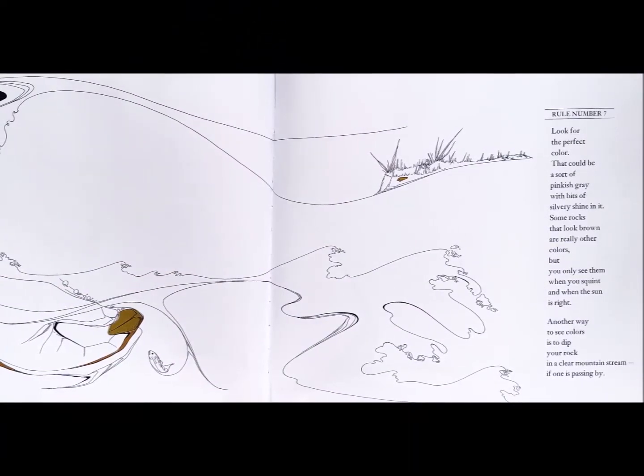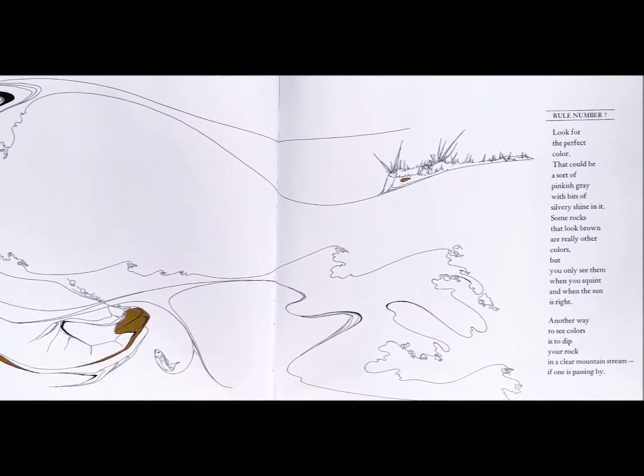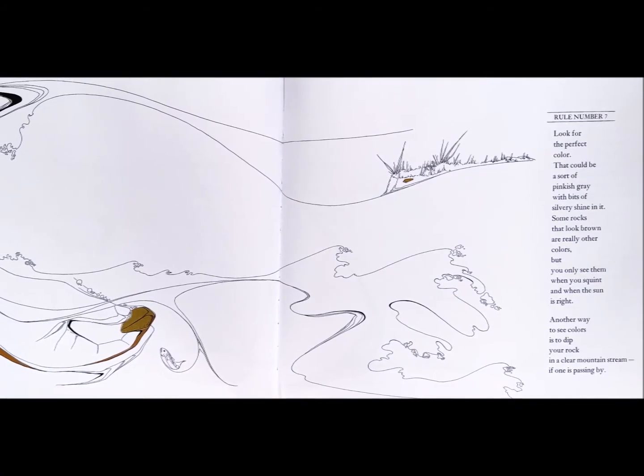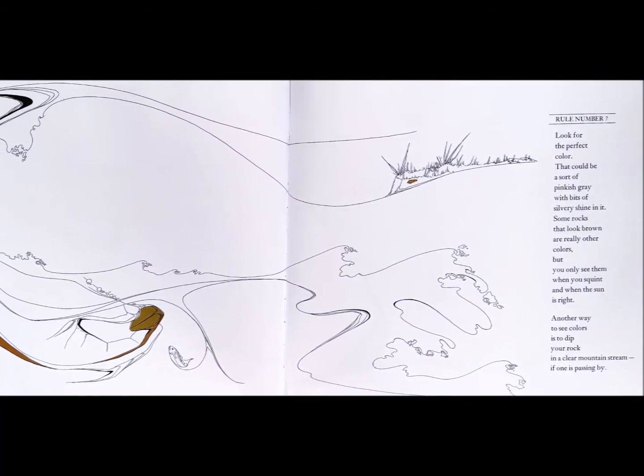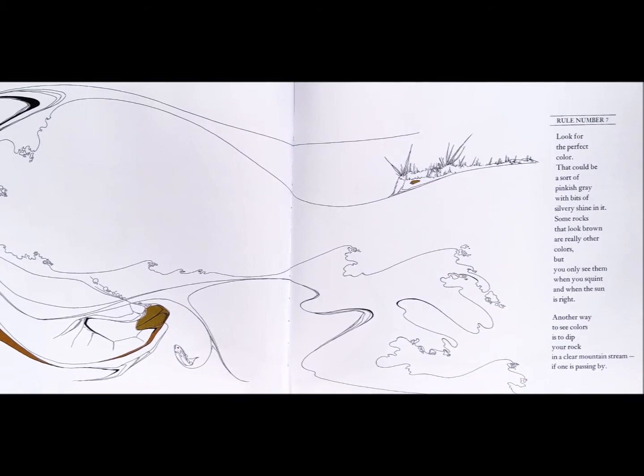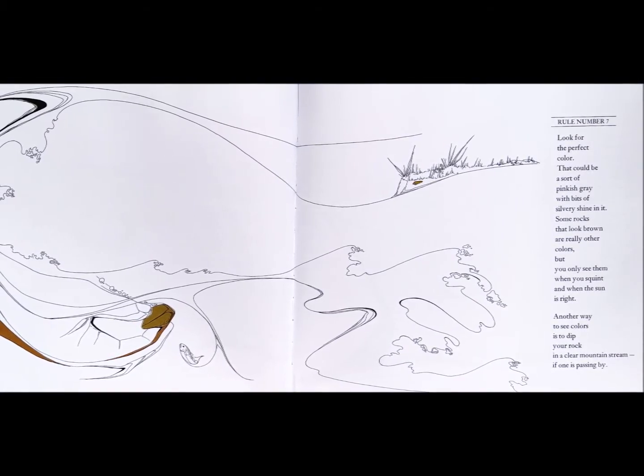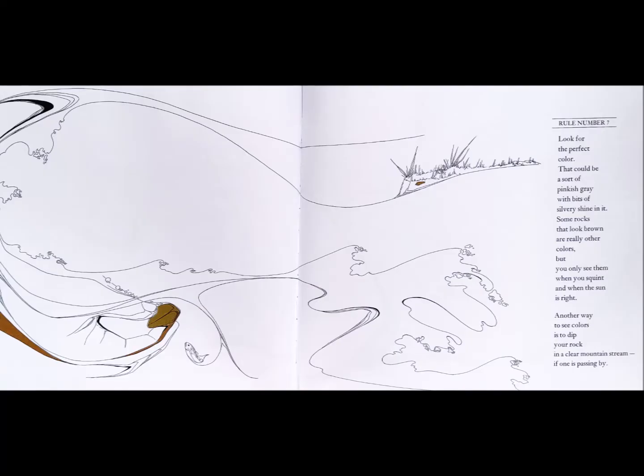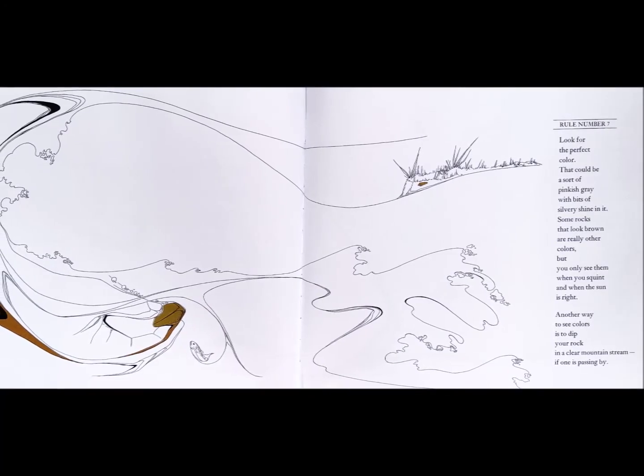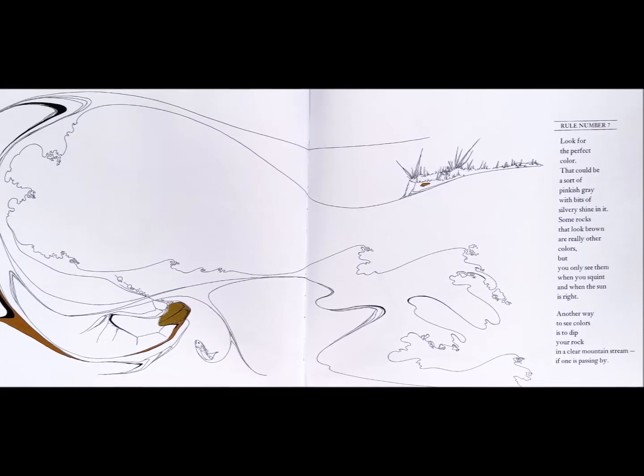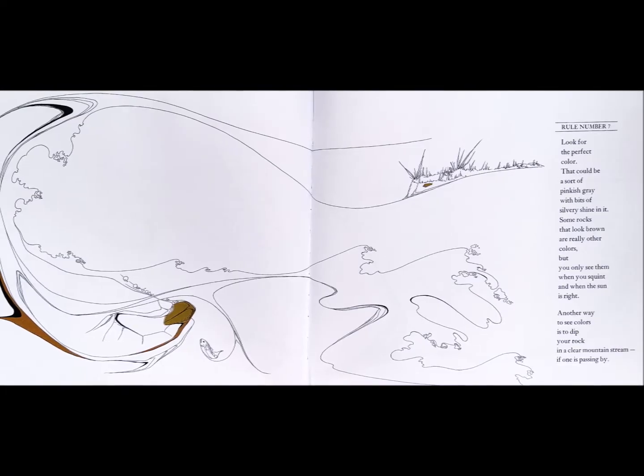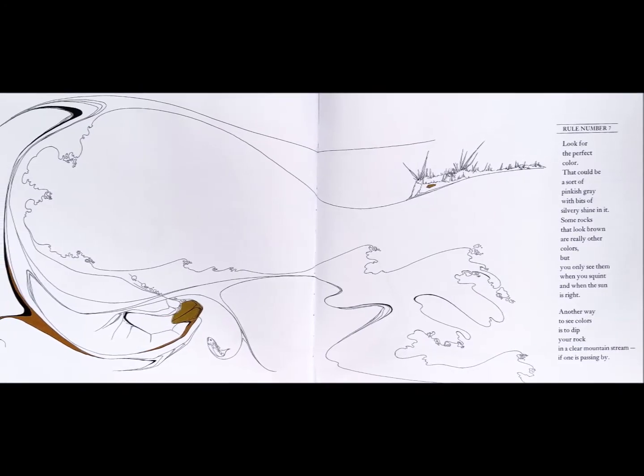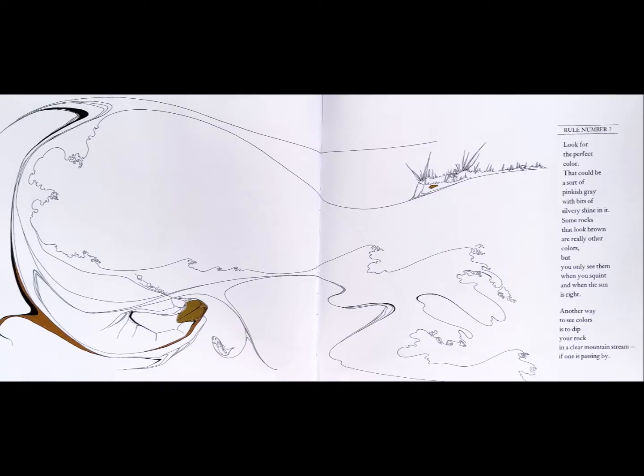Rule number seven. Look for the perfect color. That could be a sort of pinkish gray with bits of silvery shine in it. Some rocks that look brown are really other colors, but you only see them when you squint and when the sun is right. Another way to see colors is to dip your rock in a clear mountain stream, if one is passing by.